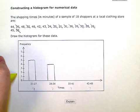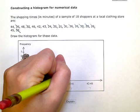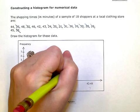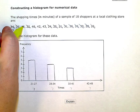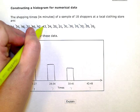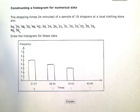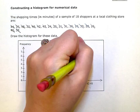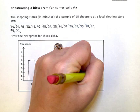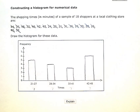And then 42 to 48, I have one, two, three, four, five, six. So this will be my highest bar at six data points in that range. And there's my histogram.